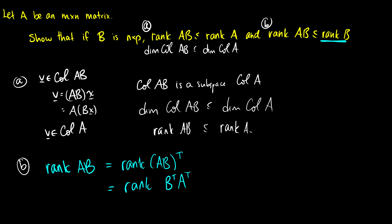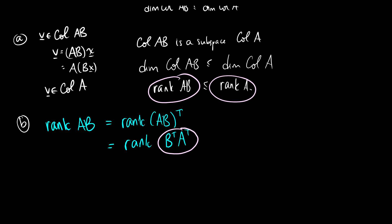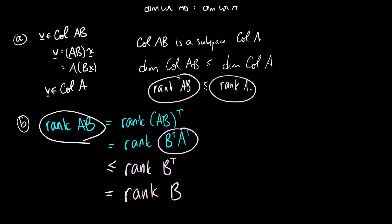Now we're in transpose territory. Applying part A — where rank(AB) ≤ rank(A) — we get that rank(B transpose A transpose) is less than or equal to rank(B transpose). And by the rank theorem again, rank(B transpose) equals rank(B). So we've shown that rank(AB) is less than or equal to rank(B).